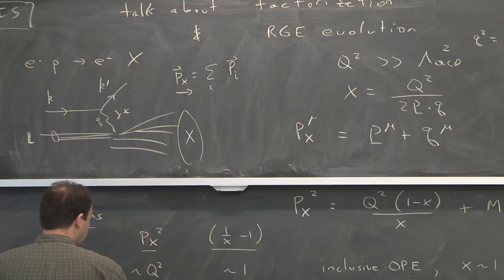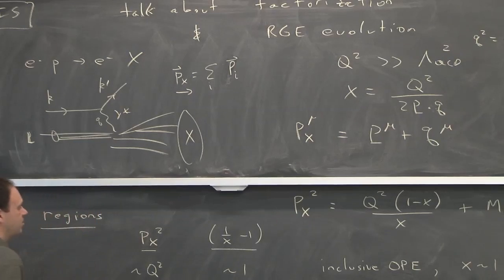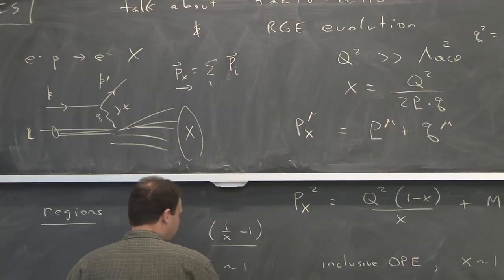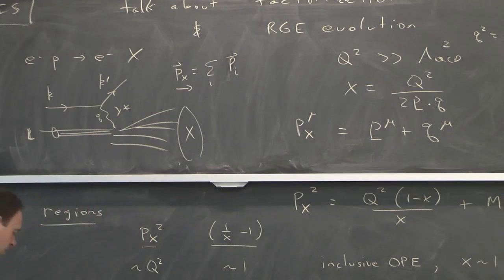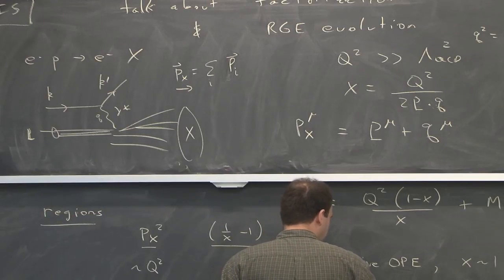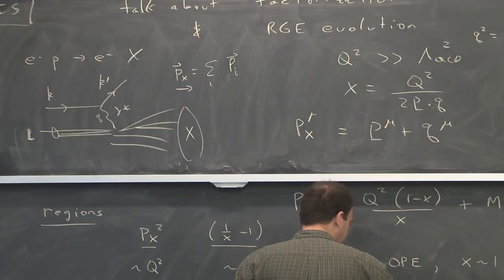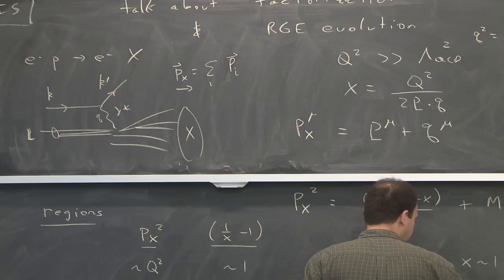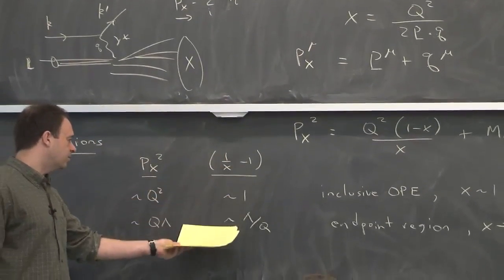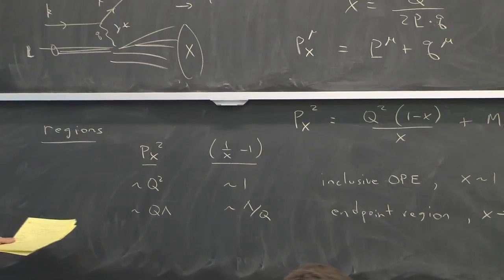And that's the one we'll deal with, actually, where effectively we're not putting restrictions on x. We're just saying it's generic, and it's not approaching any endpoints. There's also a situation where the P_x gets smaller, and then this thing is close to an endpoint, lambda QCD over Q. And that's called the endpoint region. Usually when people say x goes to 1, this is what they mean, that the 1 minus x minus 1 is of that size, lambda QCD over Q.